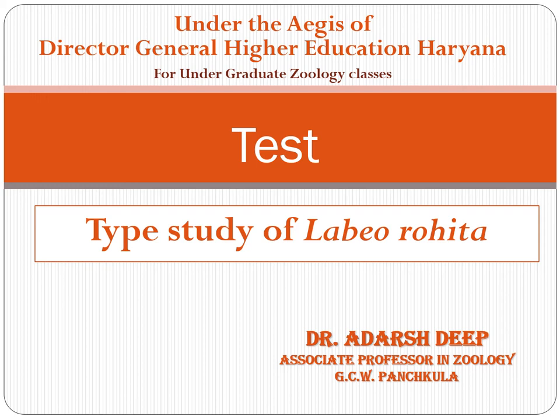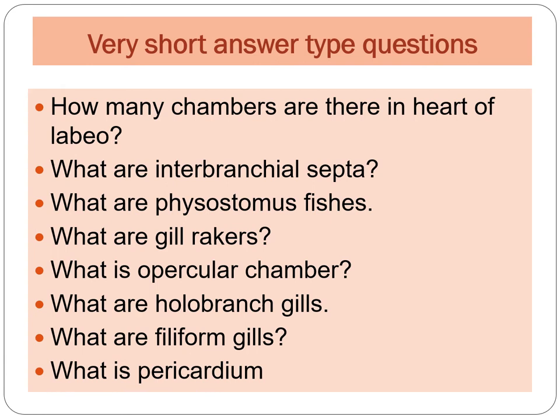The questions we can divide into three categories. The first category is very short answer type questions, which you have to answer in two to three lines. The first question of this category is: how many chambers are there in the heart of Labeo? The second question is: what are interbranchial septa? Next: what are physostomous fishes? Next: what are gill rakers?